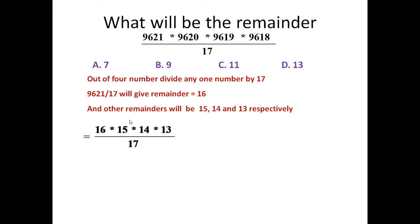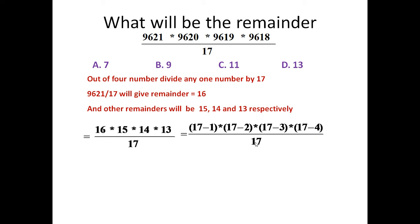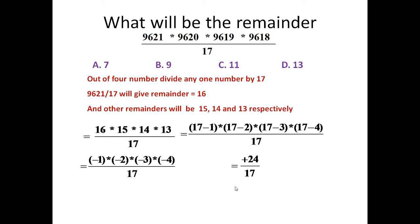So if these numbers are divided by 17, what will be the remainder? Friends, as I told you, we can write 16 as 17 minus 1, in place of 15 we can write 17 minus 2, in place of 14 we can write 17 minus 3, and in place of 13 we can write 17 minus 4. So now, dividing by 17 — the 17s are completely divisible by 17, so whatever is left is minus 1, minus 2, minus 3, and minus 4 divided by 17. If we simplify it, we get plus 24 divided by 17. When 24 is divided by 17, we are left with remainder 7. So the answer is 7.